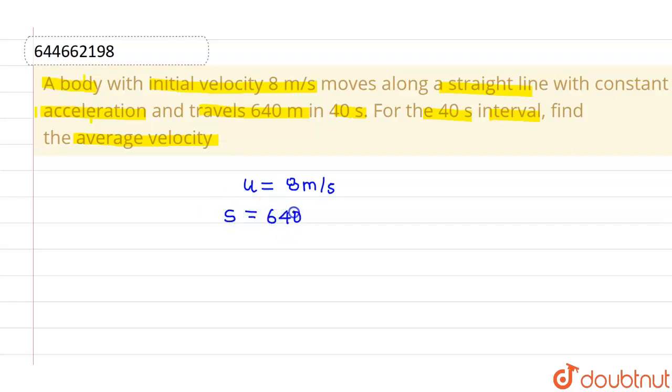In a time interval of t equals to 40 seconds, we have to find out average velocity for 40 seconds. So we know average velocity is total displacement divided by total time.